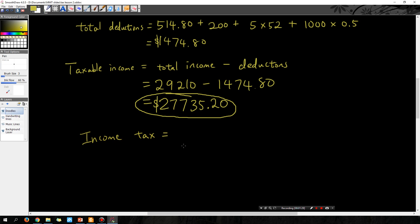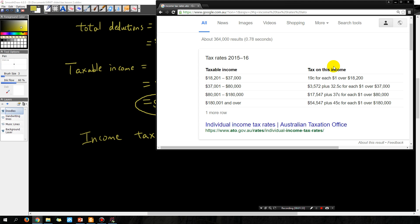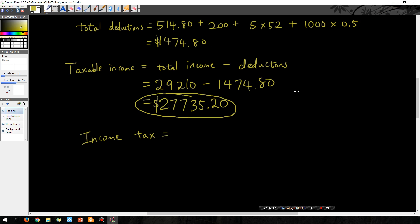The income tax is therefore equal to... now it says 19 cents for each dollar over $18,200. So 19 cents for each dollar over $18,200. So translating that into maths, it'll be 0.19, because we're working in dollars, so we have to convert the cents for each dollar over $18,200.